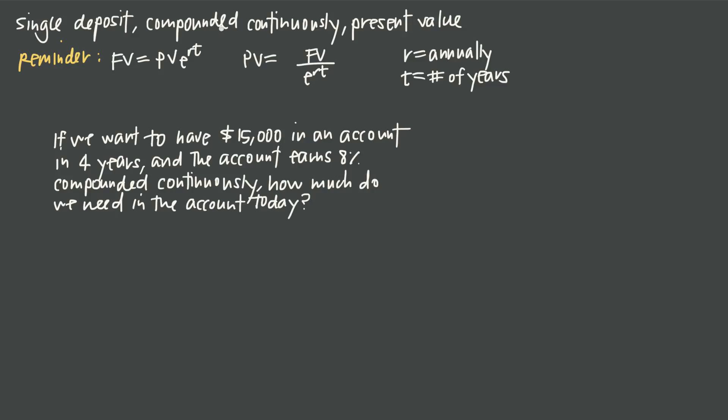When you see something like compounded n times per year, compounded annually, compounded quarterly, whatever, then the formulas that you use are different. They don't involve the exponential number e. But compounded continuously means we're going to be using these formulas and in this particular video we're looking at the present value of a single deposit compounded continuously.